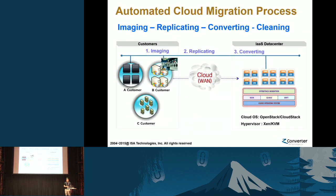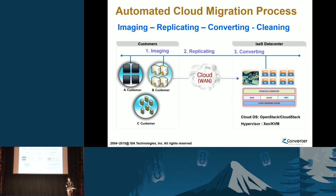This is the conceptual automated cloud migration process — very simple. The first step is creating a new cloud instance on your OpenStack cloud. The second step is the imaging process. The third step is replicating the VMDK to the target OpenStack cloud. The final step is converting. You don't have to reinstall your applications or operating system. We support live migrations — you can do this cloud migration while your source machine is still running.